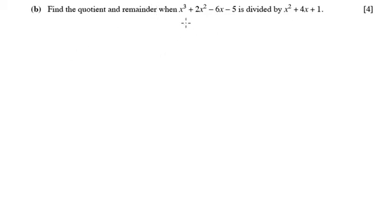1b wants us to find the quotient and the remainder when x³ + 2x² - 6x - 5 is divided by x² + 4x + 1.